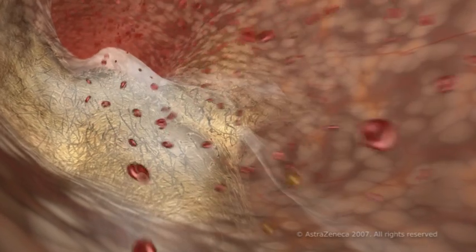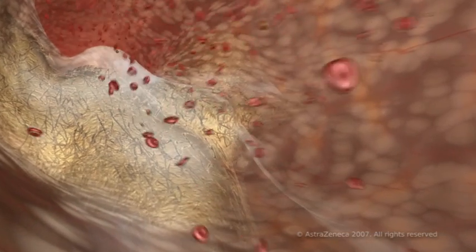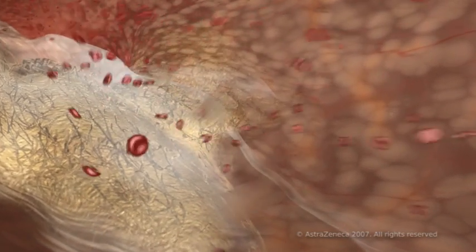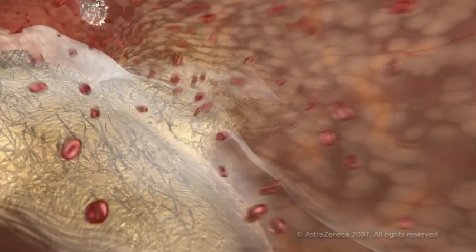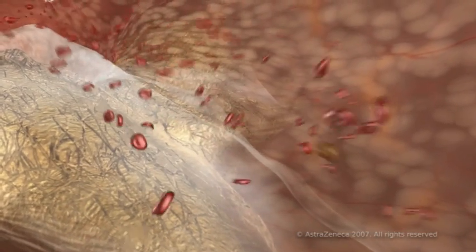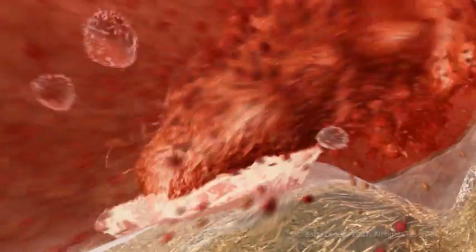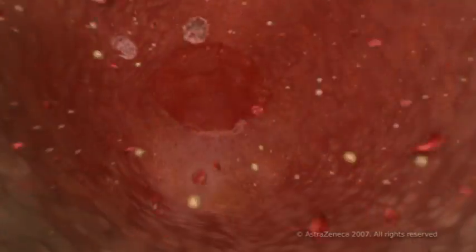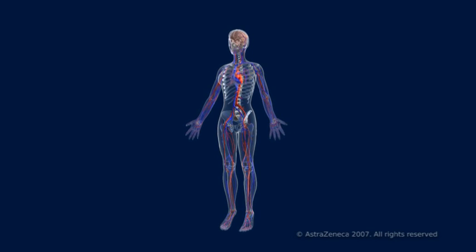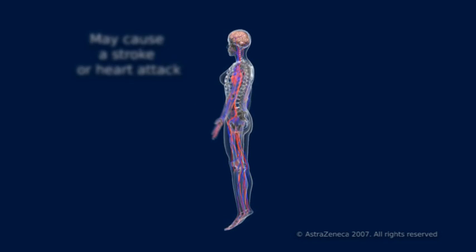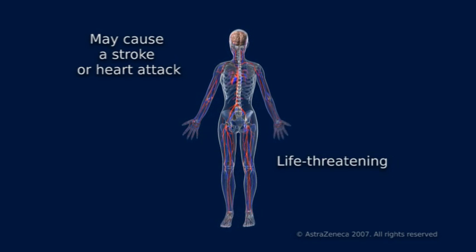As the plaque grows into the artery opening, it squeezes the blood through an ever smaller gap. The resulting increase in pressure at the narrowing can damage the capsule covering the plaque, which may then rupture, resulting in a blood clot that can completely block the artery. Depending on the location of the blockage, the consequences, such as stroke or heart attack, may be severe and could be life-threatening.